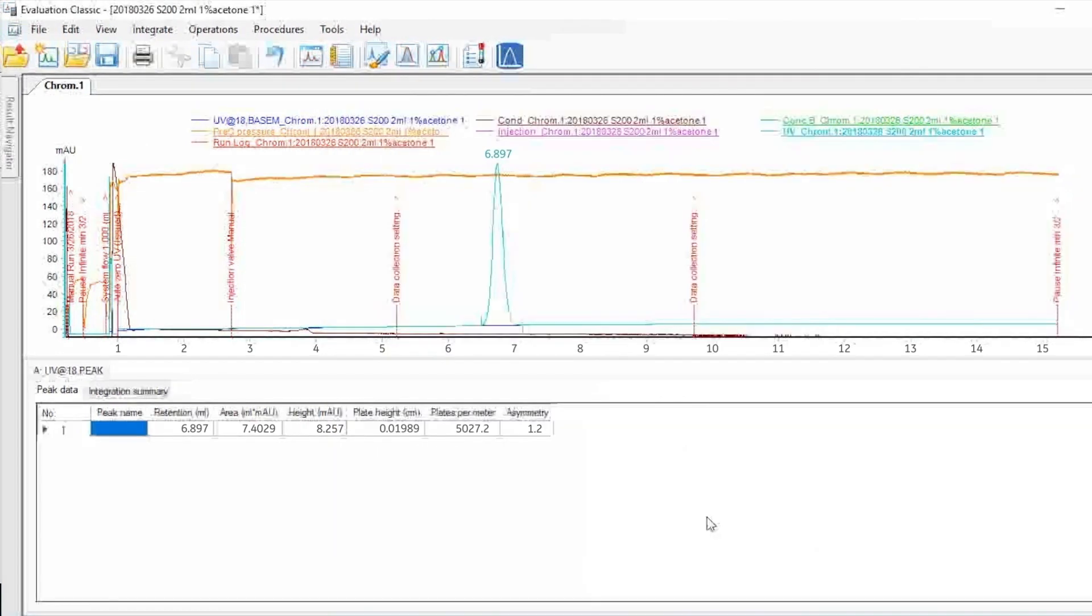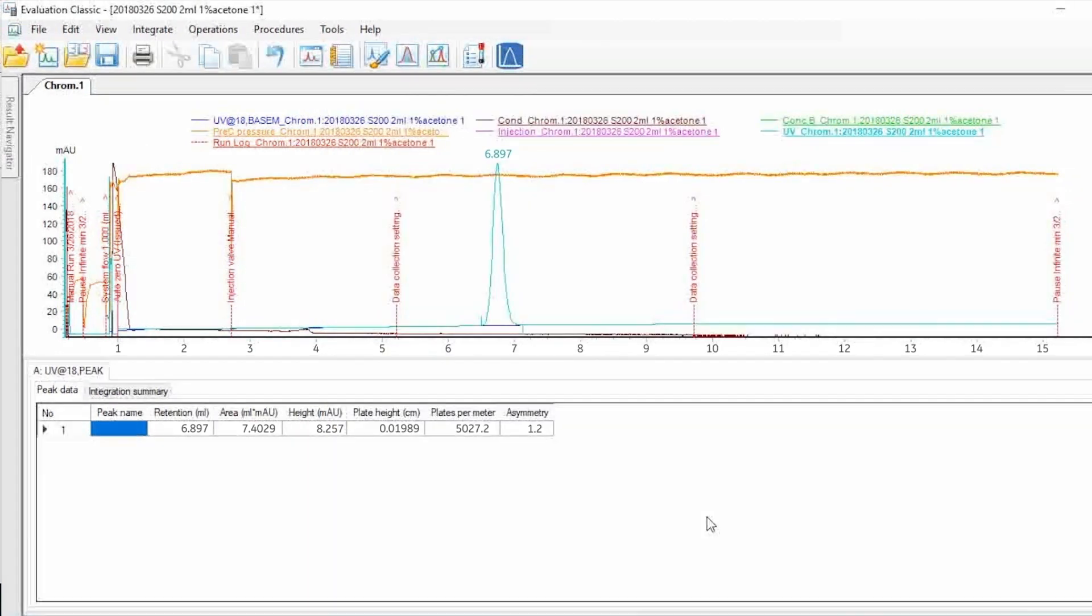The qualified HETP needs to meet requirements described in the user manual and asymmetry needs to be between 0.8 and 1.8. Based on these requirements, the performance test of this column is passed and column packing has been successfully performed.